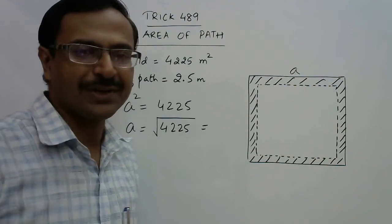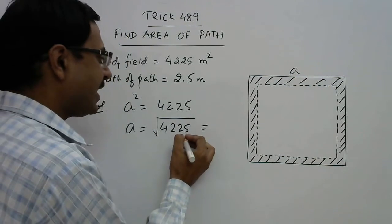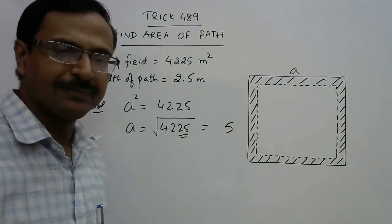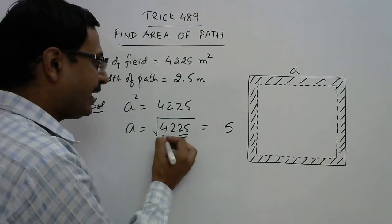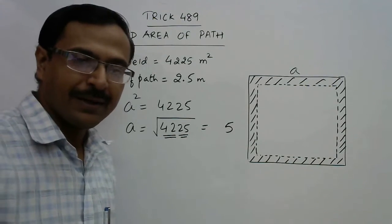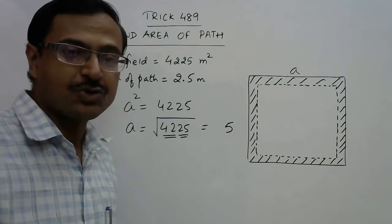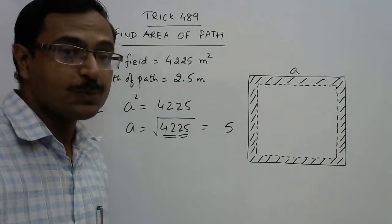Use the shortcut. See, this number is ending with 25, so our answer will end with 5, and the remaining number is 42. Tell me two numbers which are consecutive natural numbers and whose product is 42.